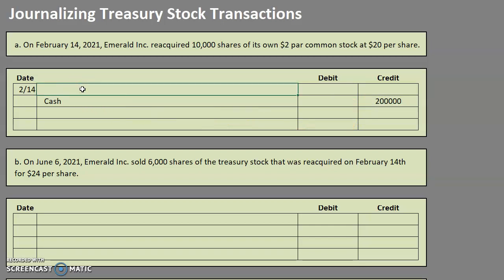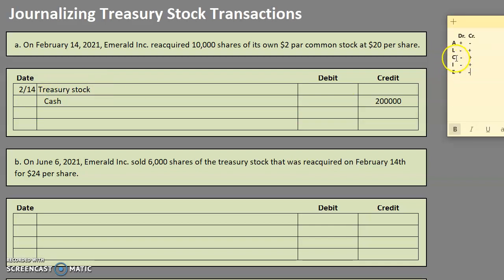As far as our debit, a lot of students are really tempted to record this as common stock, but when a company is reacquiring their own shares, we actually use a special account called treasury stock. Now, treasury stock is a contra capital account. So when we say that the company's treasury stock is going up, remember if it is a contra capital, these signs flip. A contra capital will increase with a debit and decrease with a credit.